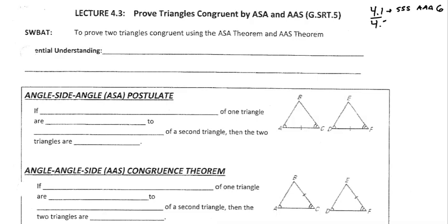In 4.2, what we did was we tried to figure out how many possible triangles could be created with a certain characteristic. If it was only one possible triangle that could be created, then we knew that we could use that as a shortcut. For example, if you had side lengths of 3, 4, and 5, and someone else had side lengths of 3, 4, and 5, those two triangles would have to be congruent because triangles are rigid figures — if you have all the sides, they cannot deform or change the angles unless you change the sides. So there's only one possible triangle you could make, so SSS was enough.